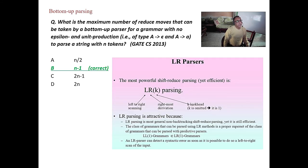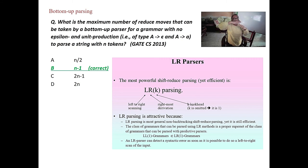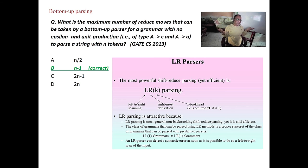An interesting question: what is the maximum number of reduce moves that can be taken by a bottom-up parser for a grammar with no epsilon and no unit productions? If there are n tokens, it cannot be 2n minus 1 because that would imply backtracking. It is not n/2 either — that could be a fraction. The obvious answer should be n or n minus 1. Since n is not an option listed, n minus 1 is the answer.